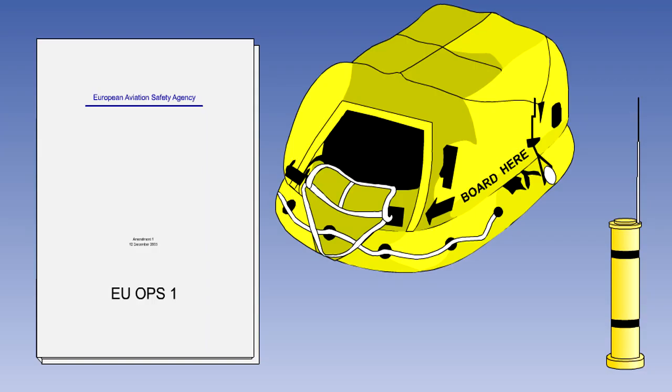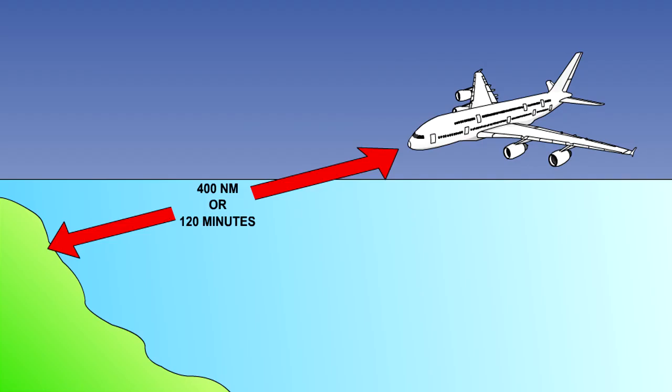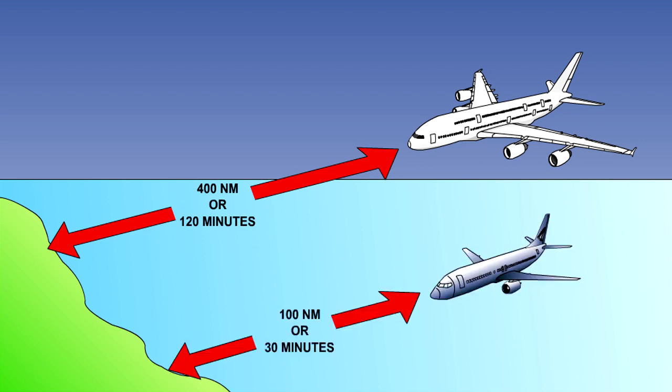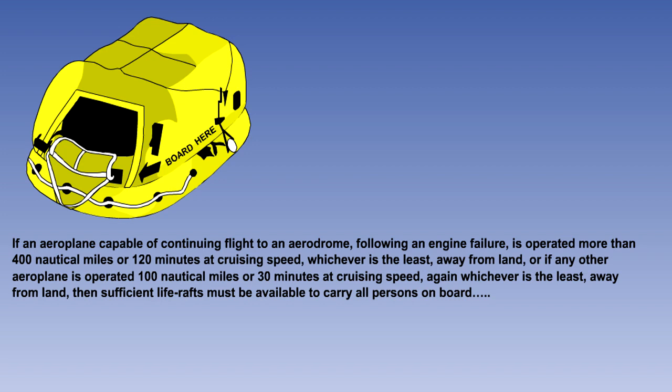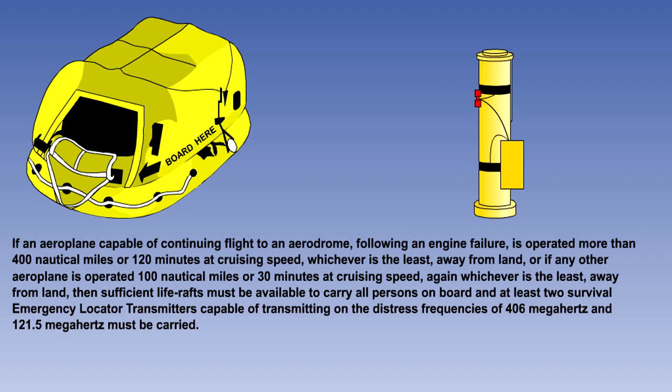The regulations regarding the carriage of life rafts and survival emergency locator transmitters on flights over water split aeroplanes into two groups. If an aeroplane capable of continuing flight to an aerodrome following an engine failure is operated more than 400 nautical miles or 120 minutes at cruising speed, whichever is the least, away from land, or if any other aeroplane is operated 100 nautical miles or 30 minutes at cruising speed, again whichever is the least, away from land, then sufficient life rafts must be available to carry all persons on board, and at least two survival emergency locator transmitters capable of transmitting on the distress frequencies of 406 MHz and 121.5 MHz must be carried.